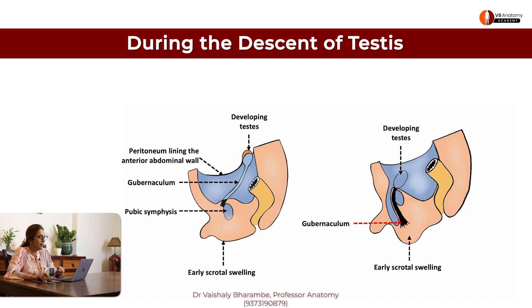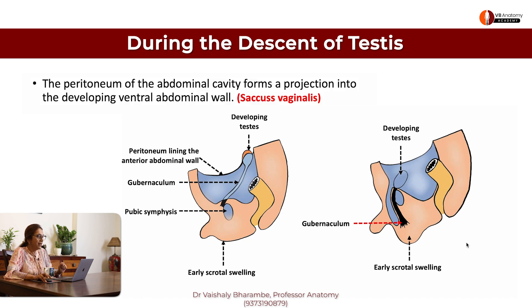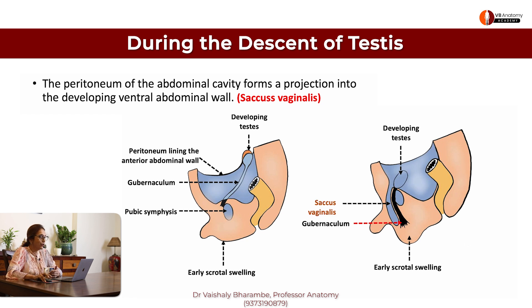Now what happens? As the developing testes descend, a layer of peritoneum leads the way. This layer of peritoneum, or fold of peritoneum, is called saccus vaginalis.